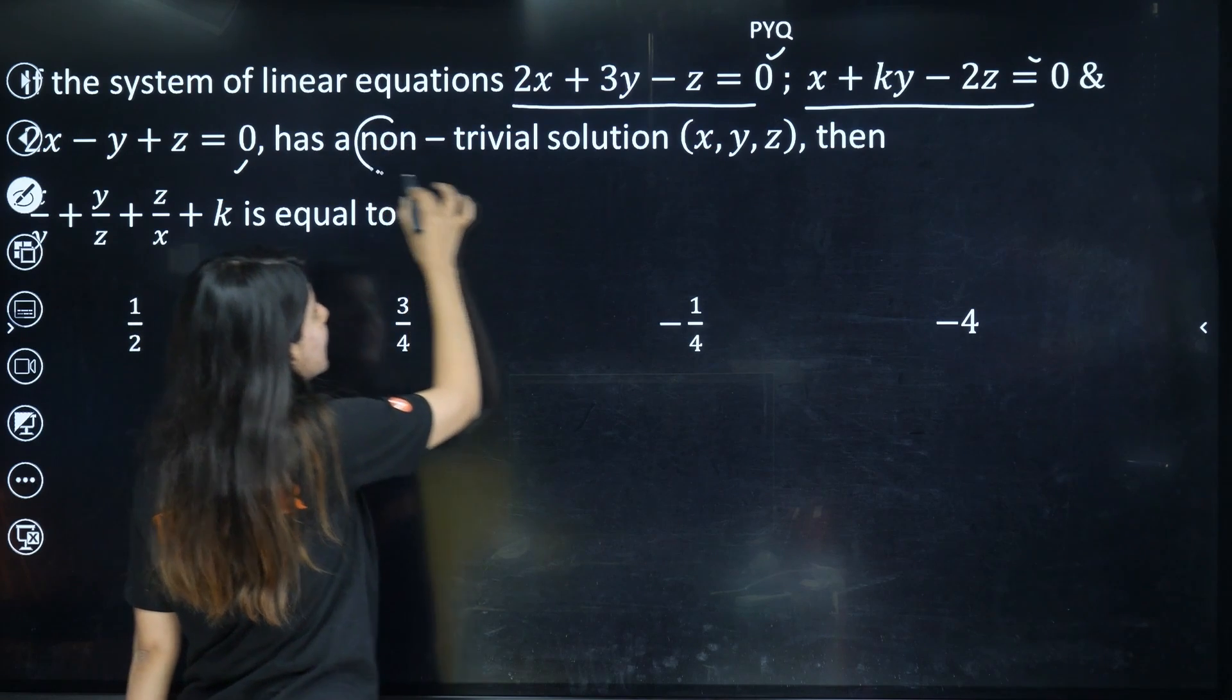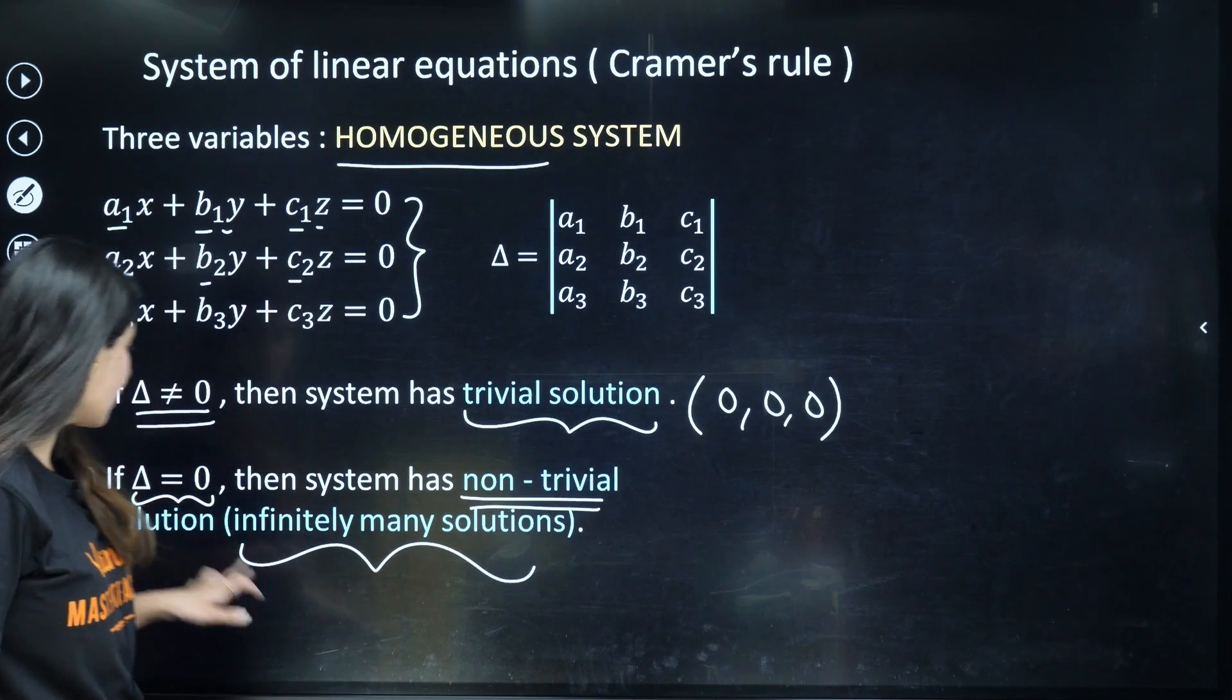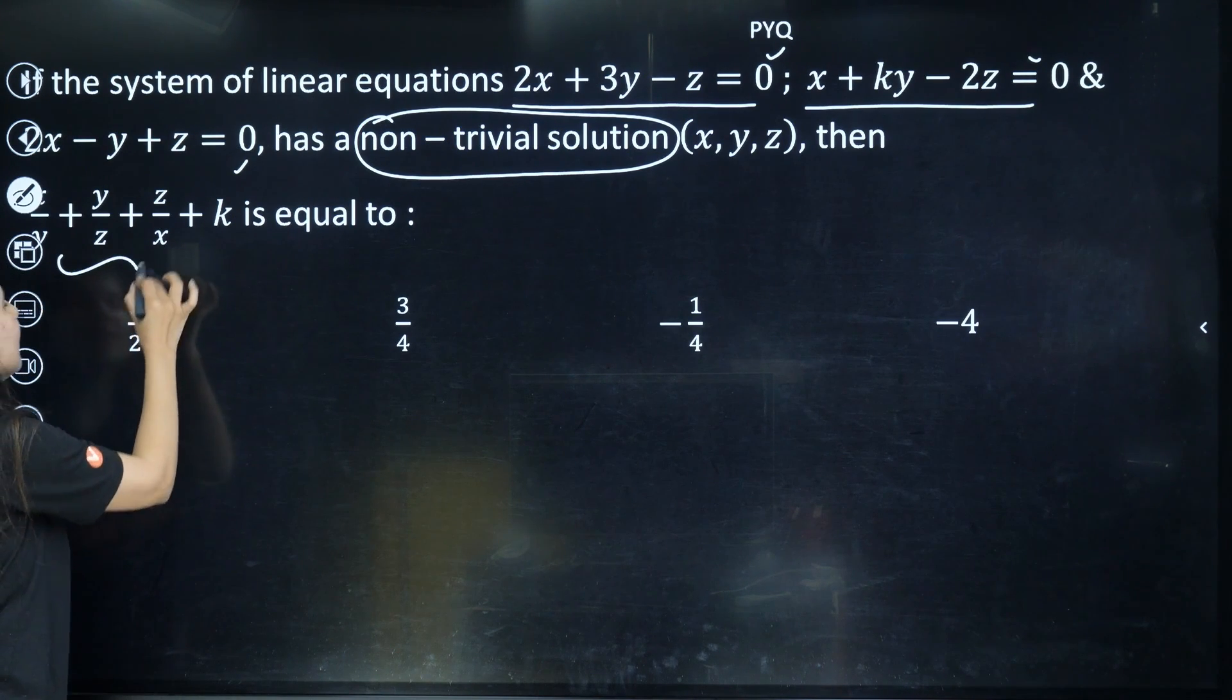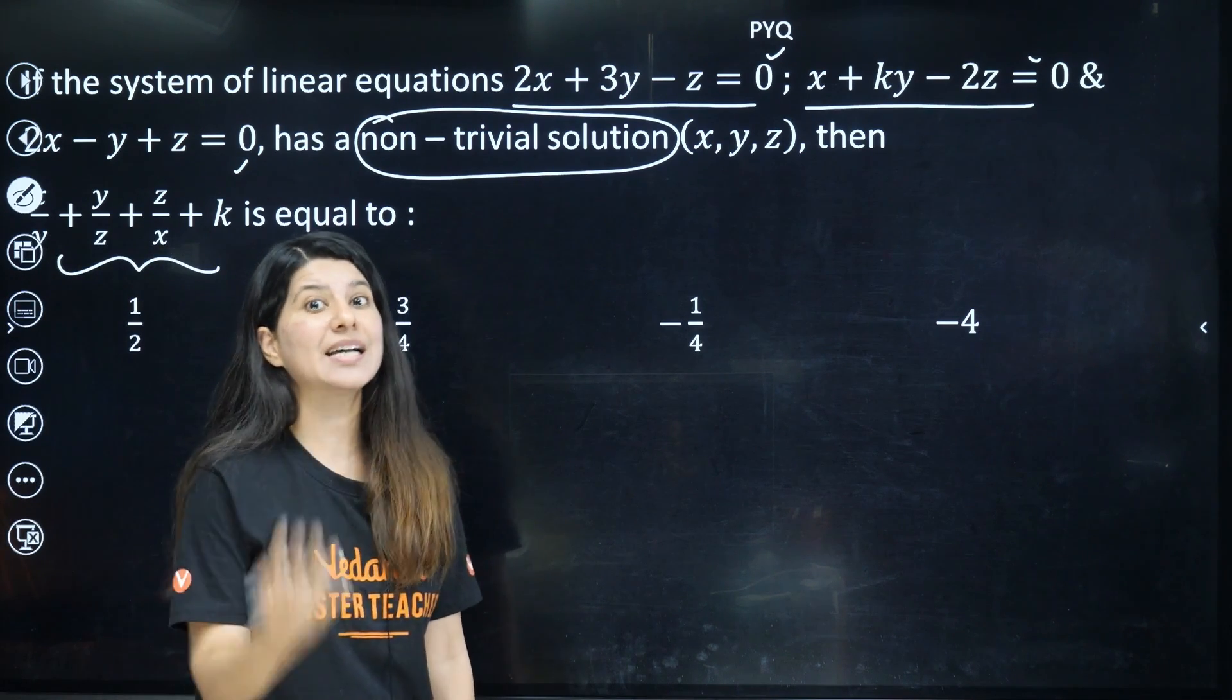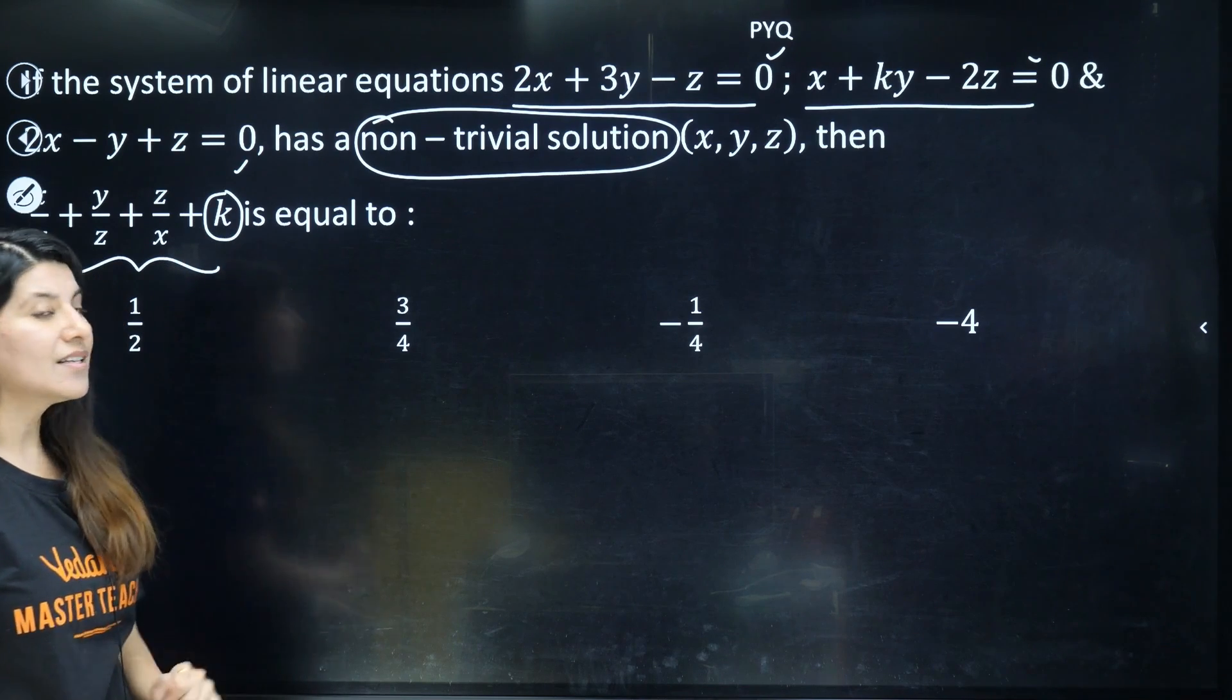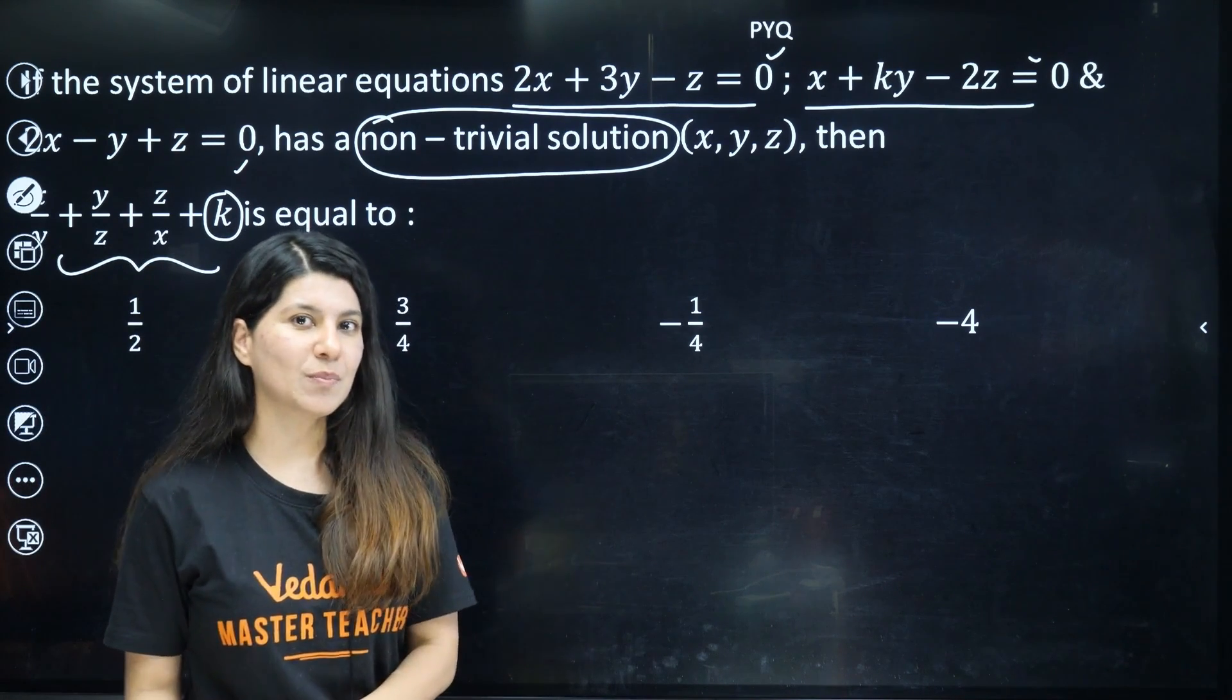Now the question says it has a non-trivial solution. What do you mean by non-trivial solution? That means your determinant will be equal to 0 and you need to figure out the value of x/y + y/z + z/x + k. So first of all, let's focus on this k, how to get this value of k by actually applying the condition that determinant should be equal to 0.